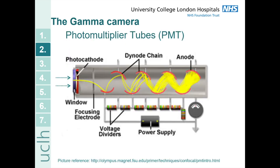The next stage of the detector is the photomultiplier tubes or PMT. Visible photons from the scintillator come into the PMT and produce an electrical signal — it converts visible light photons into an electrical signal. The visible photons hit the photocathode, which converts them into electrons. Those electrons are then accelerated through a voltage and come into contact with the dynode chain. Each time they hit the dynode the number of electrons is multiplied, magnifying the electrical signal, and it is this signal that is read by the electronics to create the image.